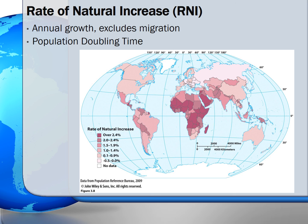The rate of natural increase is also used by geographers to determine the world's population doubling time. This is the time it takes for the population to double its size and gives us a sense of the pace at which the population is growing. At the 2012 rates, the population is expected to double in 58 years.